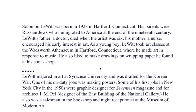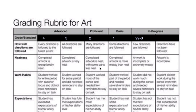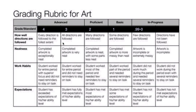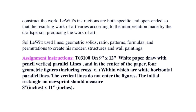Moving on to your rubric. Everything you do, you need to follow — every direction is followed to the fullest extent. For this assignment, on a 9 by 12 piece of white paper, you're going to draw with pencil vertical parallel lines, and in the center of the paper four geometric figures including a cross or X within which are white horizontal parallel lines. The vertical lines do not enter the figures.